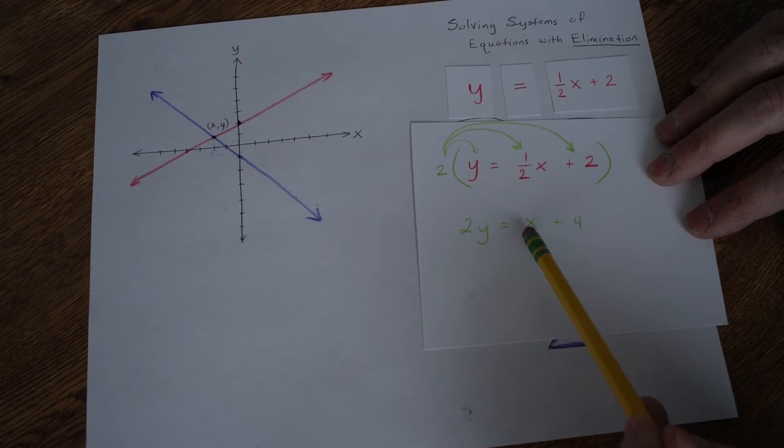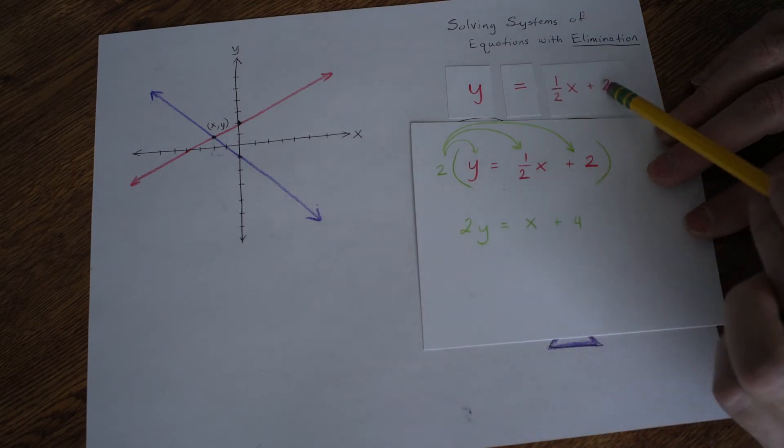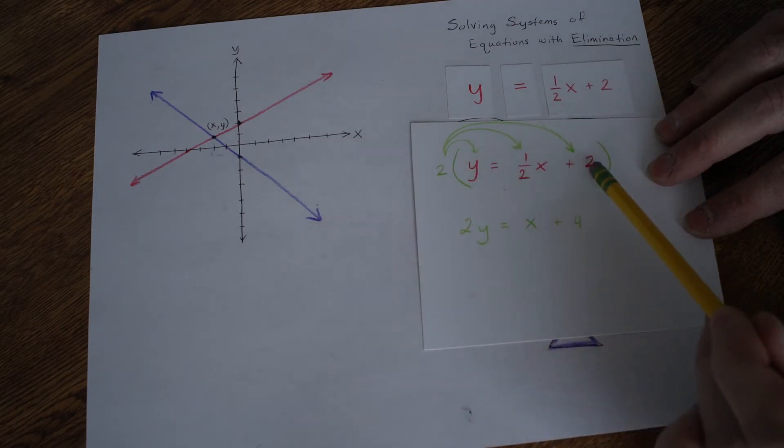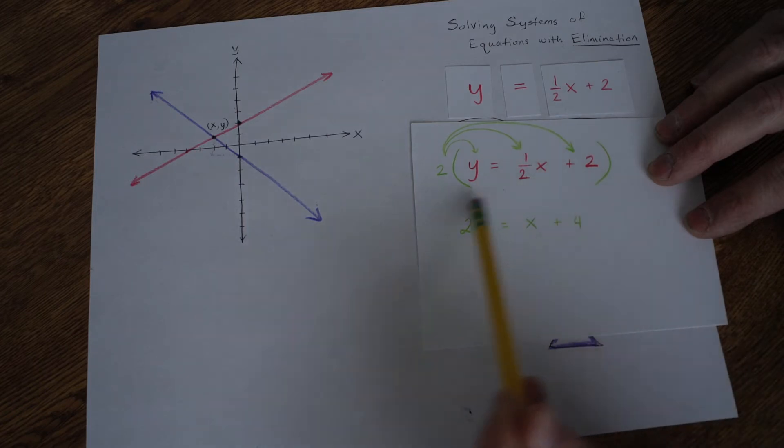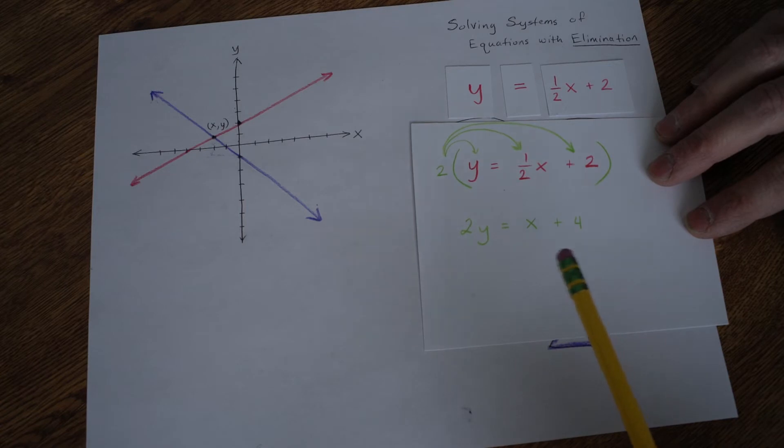So that's 1x. Half plus half is 1x. And then 2 times 2, that's 4. So this is just doubling the top scale so that I can have a 1x here.